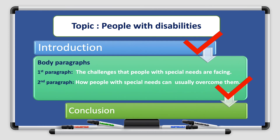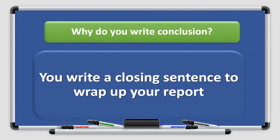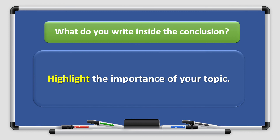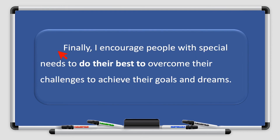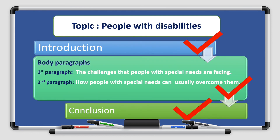Now we have covered the introduction and the body paragraphs including the first paragraph and the second paragraph. Why do you write a conclusion? You write a closing sentence to wrap up your report. Highlight the importance of your topic. Please do not write any new information in the conclusion. Our conclusion: finally, I encourage people with special needs to do their best to overcome their challenges to achieve their goals and dreams.